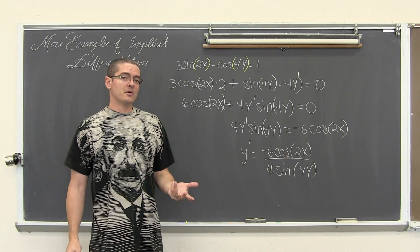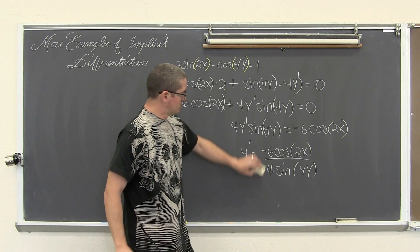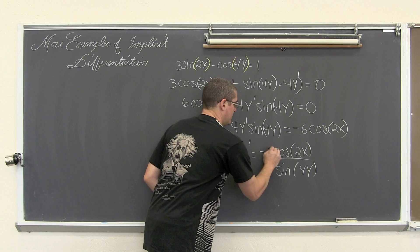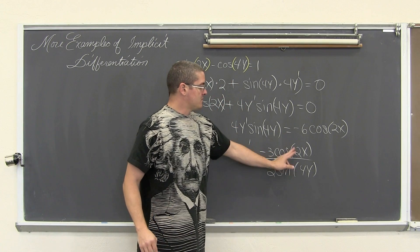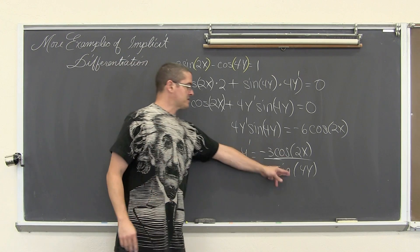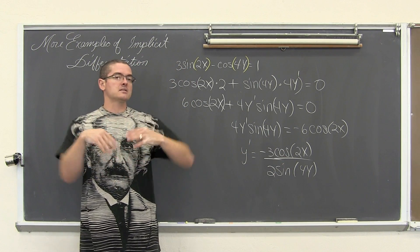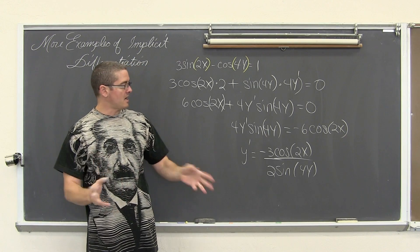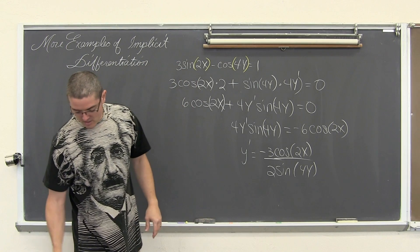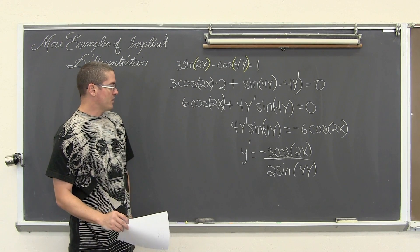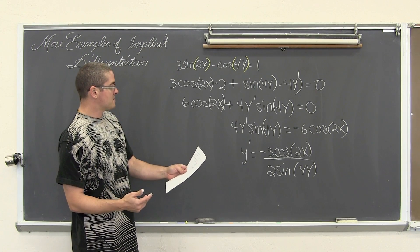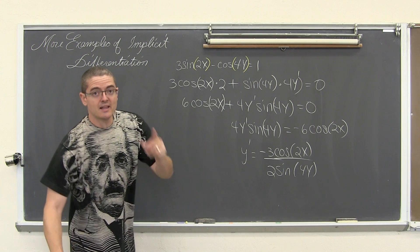Dividing both sides to isolate y prime: y prime equals negative 6 cosine(2x) all over 4 sine(4y). The 6 and 4 reduce — both are even — so 6 divided by 2 is 3 and 4 divided by 2 is 2, giving negative 3 over 2. You cannot reduce the 2 and 4 inside the cosine and sine functions, since it is cosine of 2x and sine of 4y, not simple multiplication. No further reduction is possible.